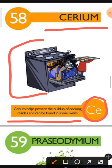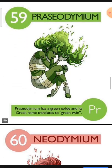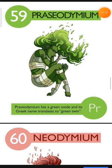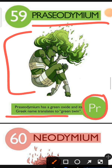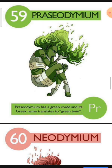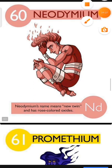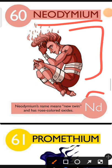Element number 59 is Praseodymium. The characteristic of Praseodymium is: Praseodymium has a green oxide and its Greek name translates to green twin. Element number 60 is Neodymium. The characteristic of Neodymium is: Neodymium's name means new twin and it has rose-colored oxides.